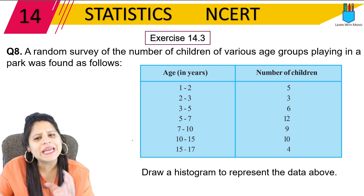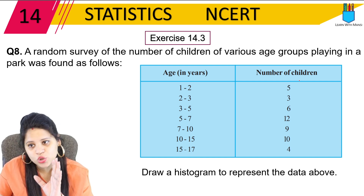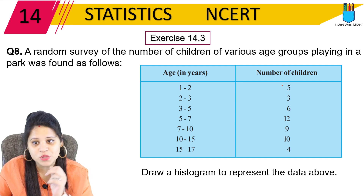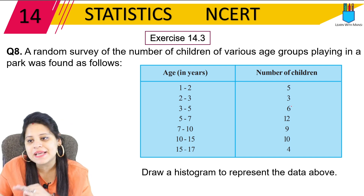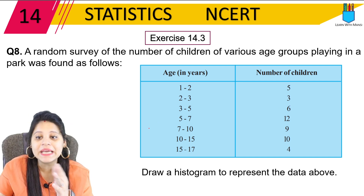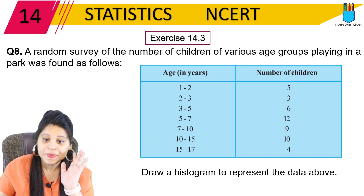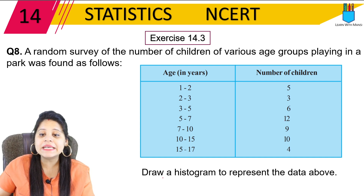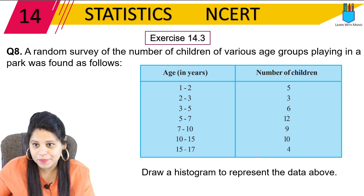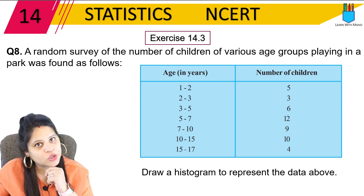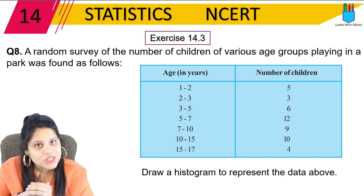So what was the survey done here? 1-2 year old kids were playing 5, then 2-3 year old kids, 3-5 year old kids, 5-7 year old kids, and so on. What we do is draw a histogram to represent the data above. Now, it is a very simple question — you can keep the data and make a histogram.